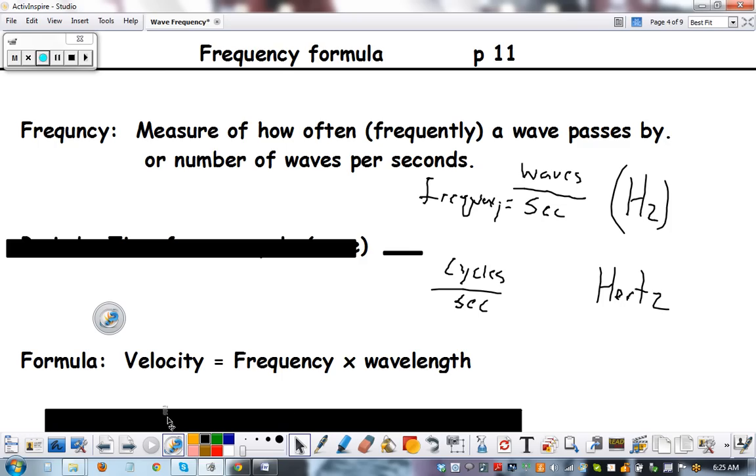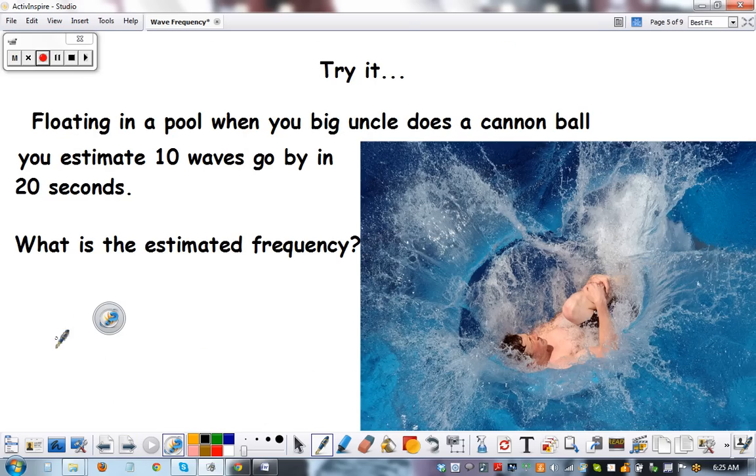And our second formula is, the velocity of a wave equals frequency times its wavelength. And it's written like this. Velocity equals, there's frequency. It's kind of a little italics f, times. And this is the symbol for wavelength. Lambda, a Greek letter. It's actually got a little hook right there.